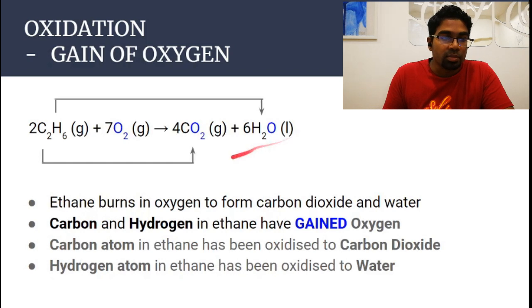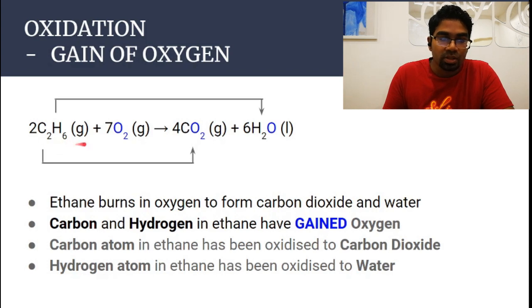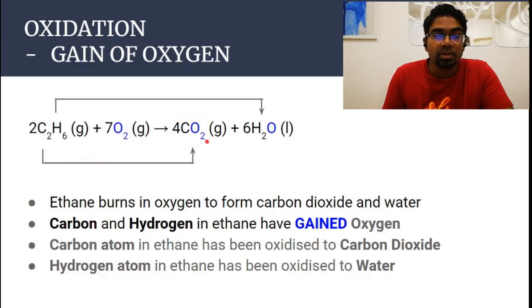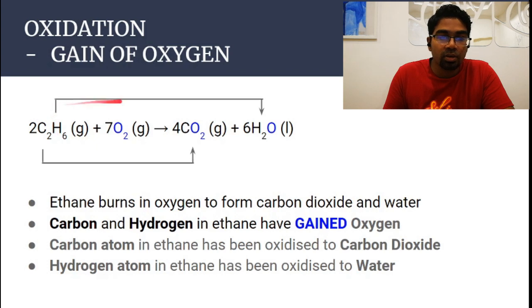Another example: C2H6, ethane, burns in oxygen to form carbon dioxide and water. The carbon molecule in ethane has become carbon dioxide, so carbon in ethane has gained oxygen and has been oxidized to carbon dioxide. Hydrogen in ethane has also gained oxygen to form water, so hydrogen has been oxidized to water.